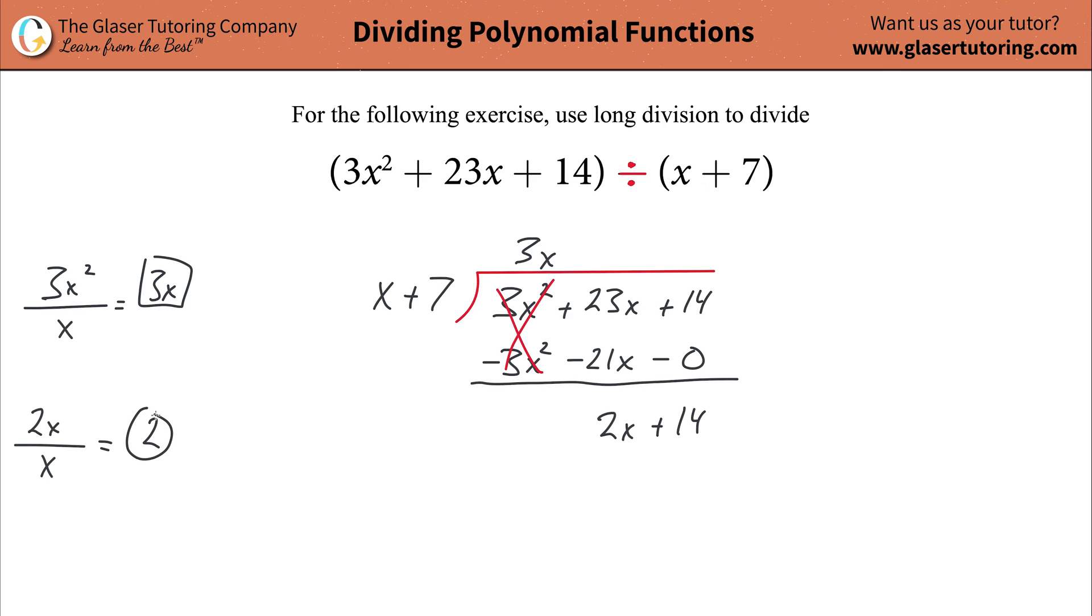This is a positive 2 because this was a positive 2x. And why was that a positive 2x? Because 23x minus 21x is positive 2x. So that's why it's going to be added. You're going to add this 2.